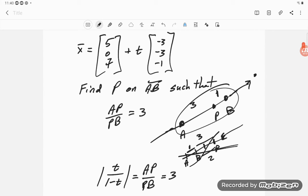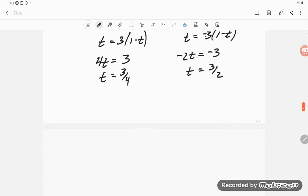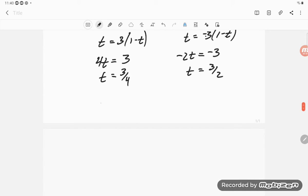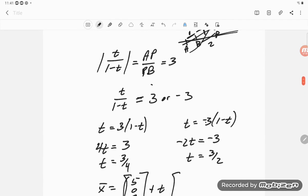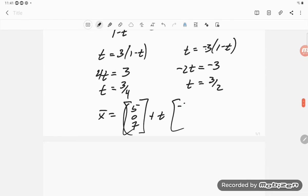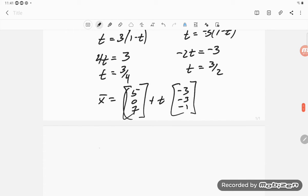And so then we can substitute that in here. So we've got 5, 0, 7. So let me rewrite that. x bar is 5, 0, 7, plus t times negative 3, negative 3, negative 1.